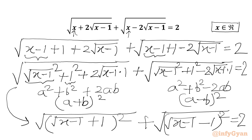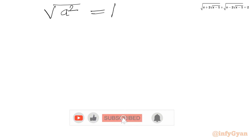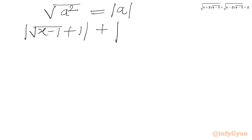Now we know that √(a²) = |a|, the absolute value of a. So I can write our equation as: |√(x−1) + 1| + |√(x−1) − 1| = 2.